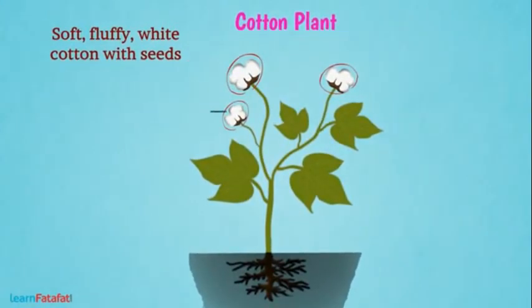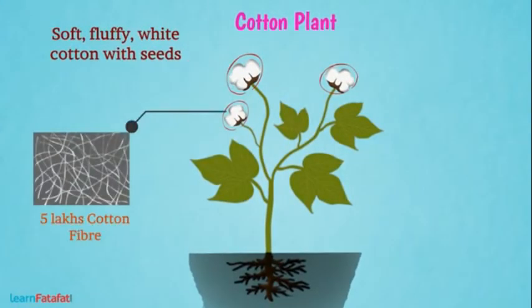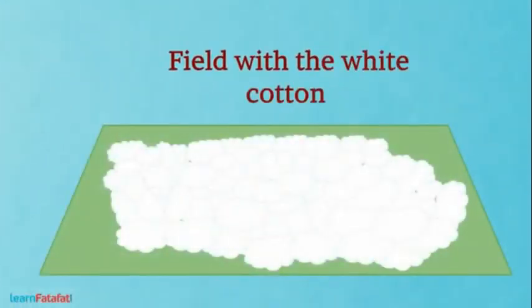A cotton ball can contain about five lakh (five hundred thousand) cotton fibers. If you look at the field with white cotton, it looks as if the field is covered with snow.